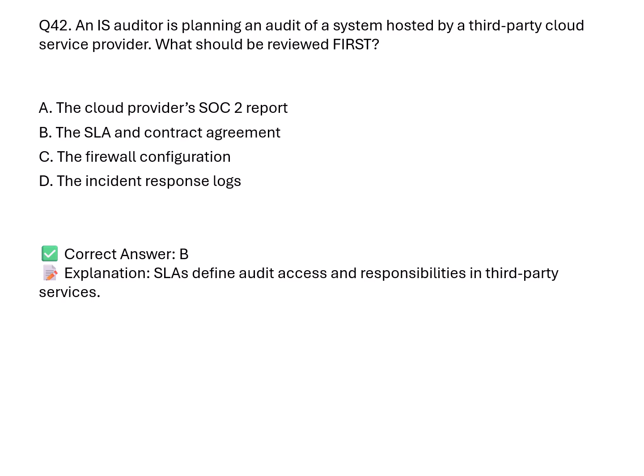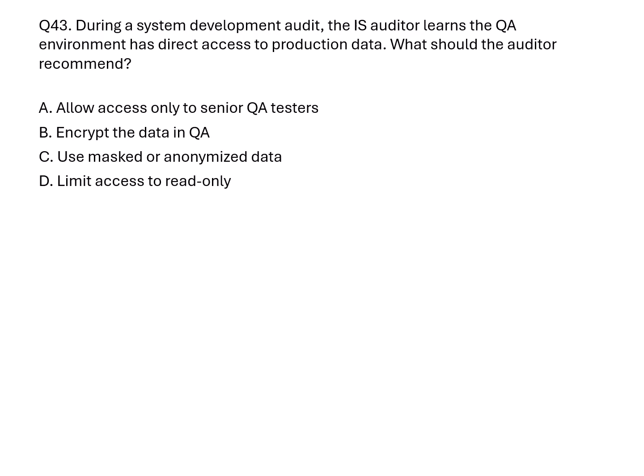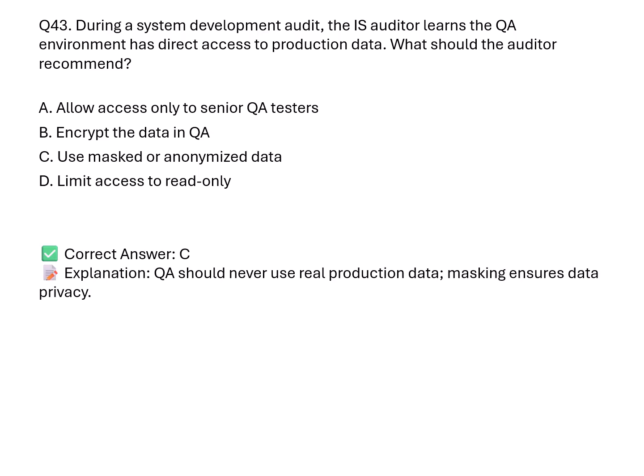Question 43. If the QA environment has direct access to production data, what should be recommended? A. Allow only senior testers. B. Encrypt the data. C. Use masked or anonymized data. D. Limit access to read-only. Correct answer: C. Explanation: Production data should not be used in testing environments. Data masking protects privacy and security.